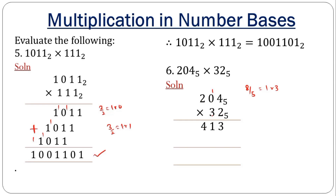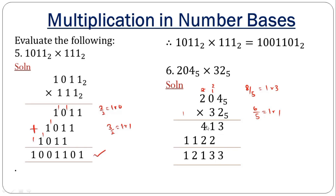In the next step, 3 multiplies 4, giving 12. Since this is base 5, divide 12 by 5: you get 2 remainder 2. Carry 2 to the next position and record the remainder. Then 3 times 0 is 0, plus the 2 carried over. Then 3 times 2 is 6; in base 5, divide 6 by 5 gives 1 remainder 1. Record 1 and carry 1. Then we add all rows: bring down 3, another 3, and 6 divided by 5 gives 1 remainder 1. Carry, giving 2, and bring down the 1. That is our solution.